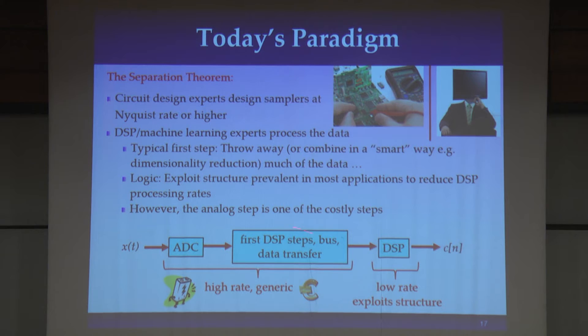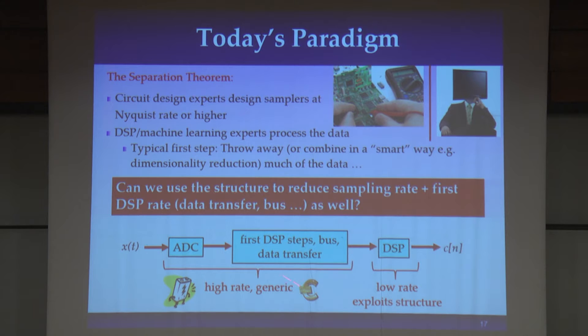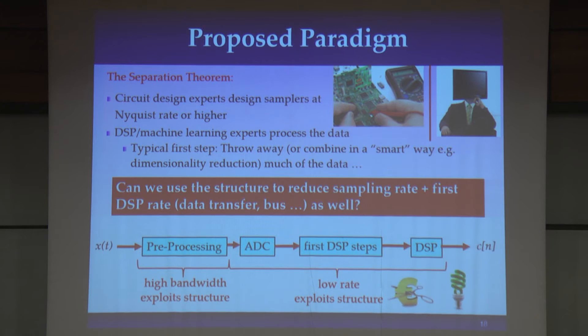What's happening here is that our ADC and our first DSP steps — the costly part of the system — are all being done at the high rate and with high power. On the other hand, when we move to the digital domain, we start exploiting structure in our signals and reduce the rate. What we would like to do is use the same structure we use in the DSP domain all the way in the front end, doing some pre-processing to reduce the rate, and then have our ADC, the first steps, and the DSP all being done at the low rate — saving power, energy, and costs.